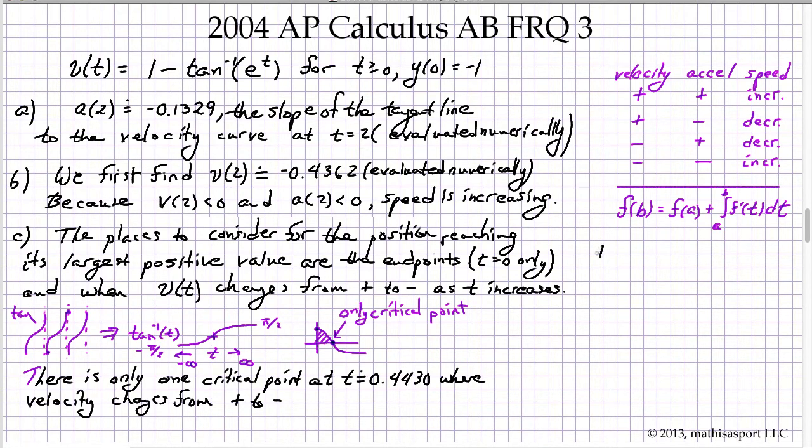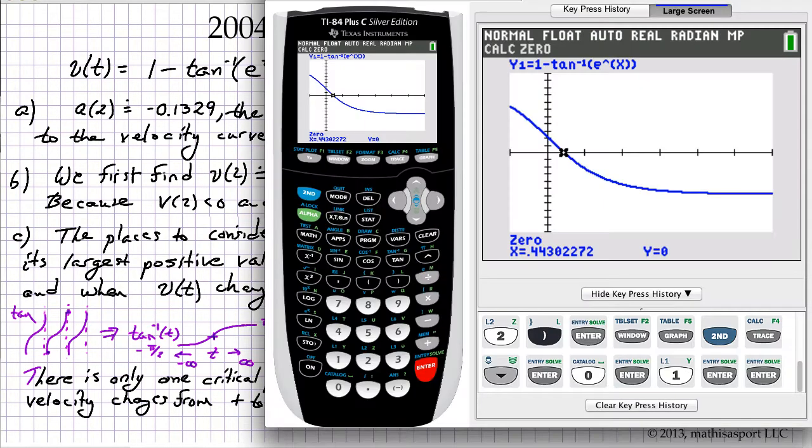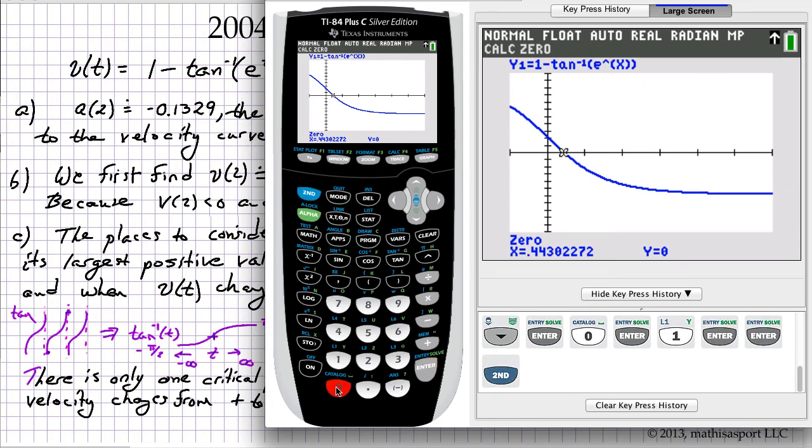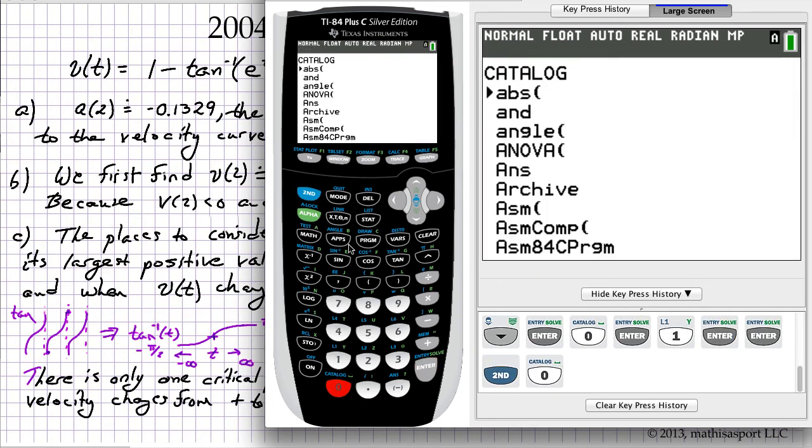So finally part D. What's the position of the particle at t equals 2? Well that's the initial position plus the signed area under the velocity curve. So for that we need to use the numerical integration.